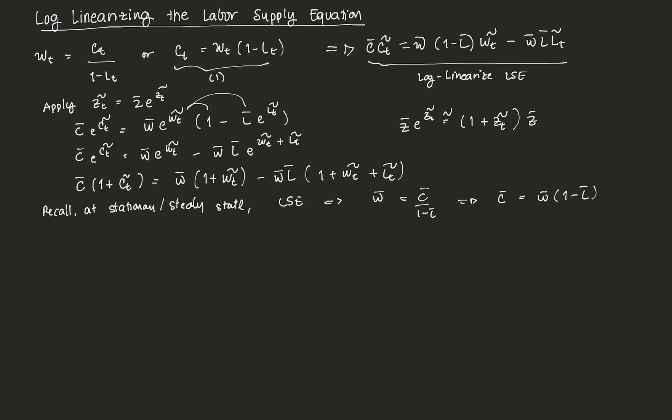If we just distribute the steady state values, we can get C bar plus C bar Ct tilde equal to W bar plus W bar Wt tilde minus W bar L bar minus W bar L bar Wt tilde minus W bar L bar Lt tilde. Now notice this identity here, you can see it spread around in this equation here.